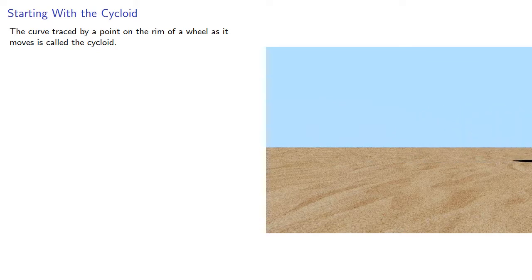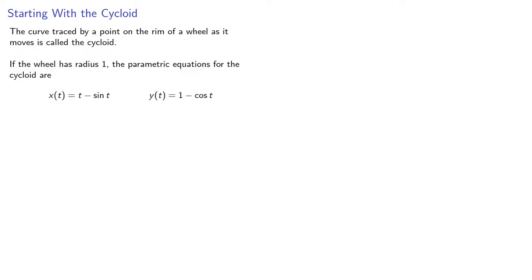And if the wheel has radius 1, the parametric equations for the cycloid are x(t) = t - sin t, and y(t) = 1 - cos t.